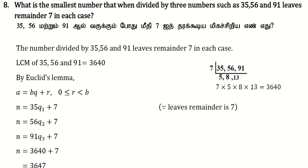What is the smallest number that, when divided by three numbers such as 35, 36, and 91, leaves the remainder 7 in each case?